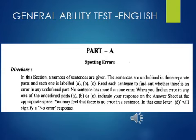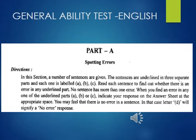General Ability Test, In English, Part A: Spotting Errors. Directions: In this section, a number of sentences are given. The sentences are underlined in three separate parts and each one is labeled A, B, C. Read each sentence to find out whether there is an error in any underlined part. No sentence has more than one error. When you find an error in any one of the underlined parts A, B, or C, indicate your response on the answer sheet at the appropriate space. You may feel that there is no error in a sentence. In that case, letter D will signify no error response.